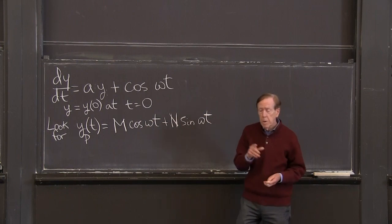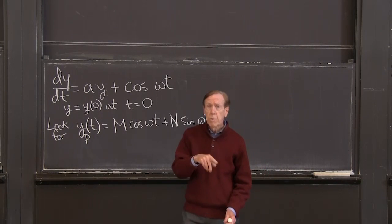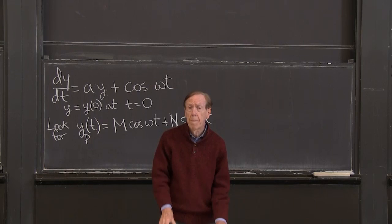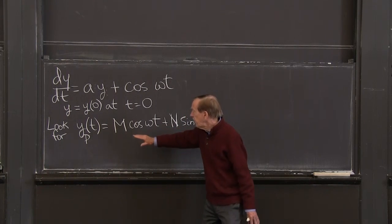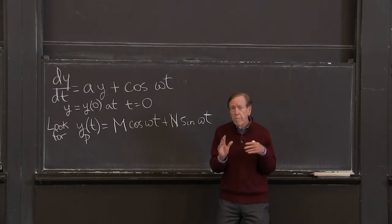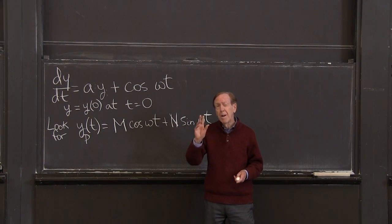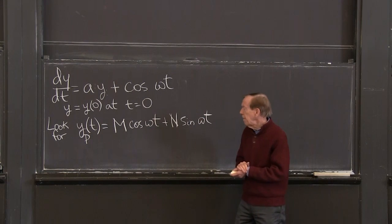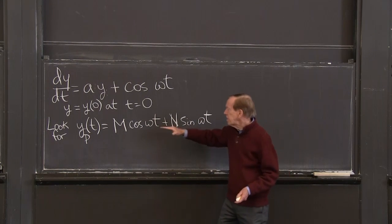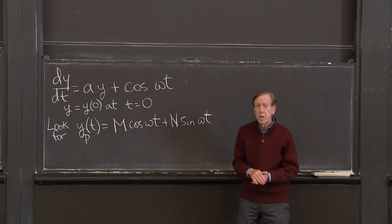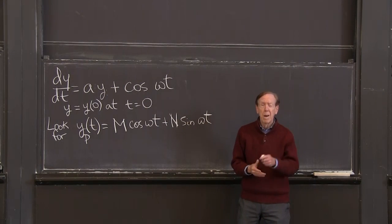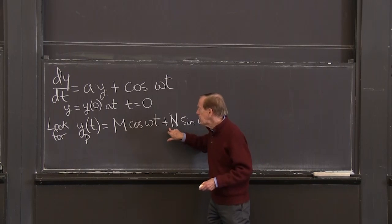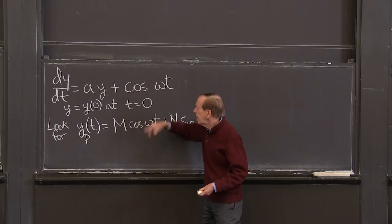That's the right thing to assume. There will be three different ways to write the answer to this problem. This is the first — sort of the most straightforward, but not the best in the long run. I'm going to substitute that into the equation and find m and n. That's my job: find these numbers.